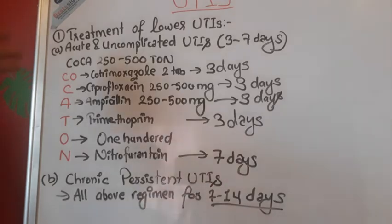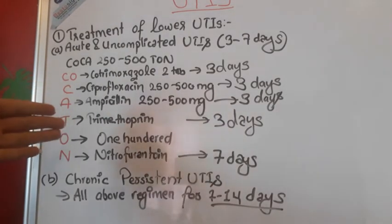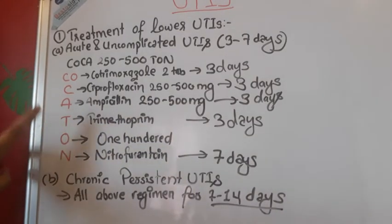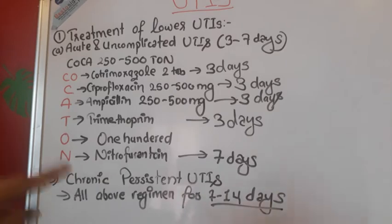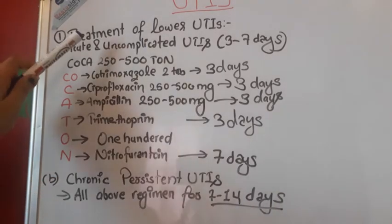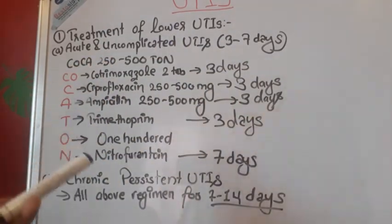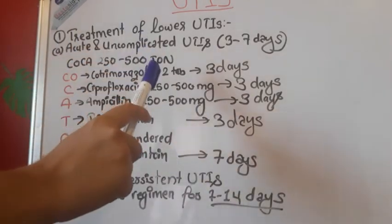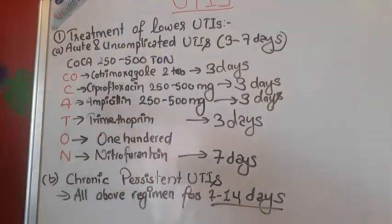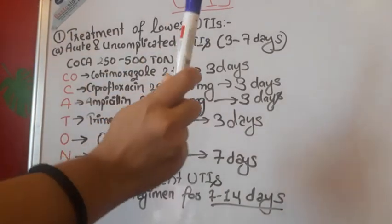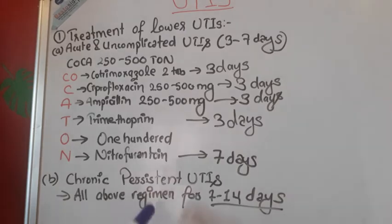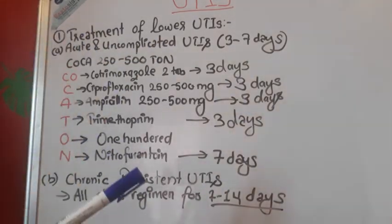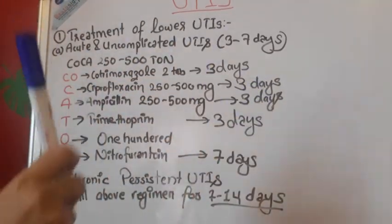Drug treatment is very important in this topic. The drugs used for acute and uncomplicated UTIs are given for three to seven days, whereas for chronic persistent UTIs the drug regimen is the same but the duration is extended to seven to fourteen days. The antibiotics used can be bacteriostatic or bactericidal.